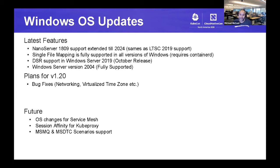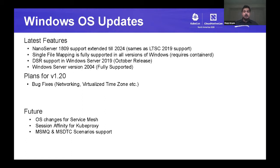On Windows OS updates: Nano Server 1809 support has been extended officially to 2024, the same as the Windows 2019 LTSC support cycle, based on requests from the Kubernetes community. Single file mapping is now fully supported. DSR support is coming in the October release. Windows Server 2004, the latest SAC release, is now fully supported and being tested in the test grid for Kubernetes.